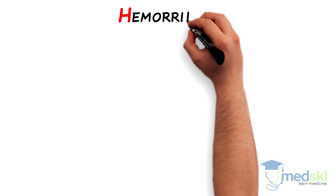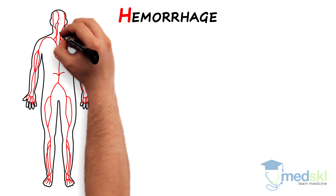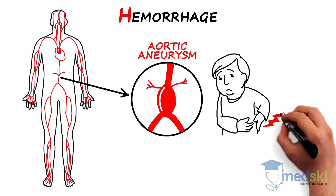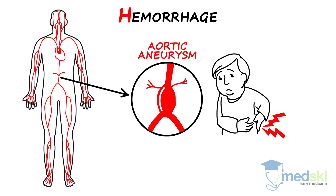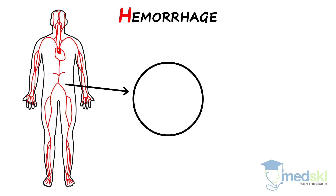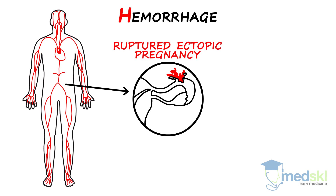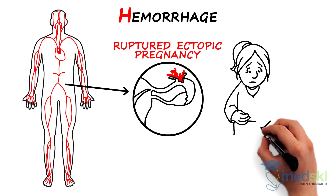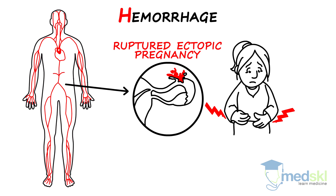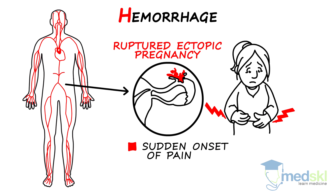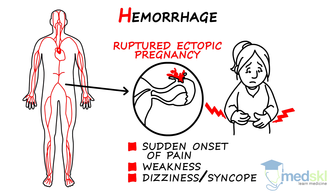H is for hemorrhage. You need to rule out an aortic aneurysm if your patient presents with sudden onset of pain that radiates to the back. And you should rule out a ruptured ectopic pregnancy in women of childbearing age. These hemorrhagic disorders manifest with a sudden onset of pain and often have symptoms of volume loss that include weakness and dizziness or syncope.